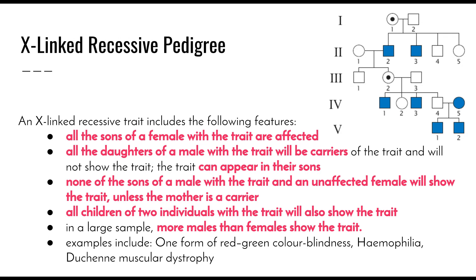X-linked recessive pedigrees have the following features. All sons of females with the trait are affected, because the mother has two X chromosomes carrying the recessive allele and must pass one to her son, and there is no matching allele on the Y chromosome so the recessive trait is expressed. All daughters of a male with the trait will be carriers. If the mother is heterozygous — one dominant X, one recessive X — the daughter may or may not show the trait, but she carries the recessive allele on her other X chromosome and can pass it to future generations.